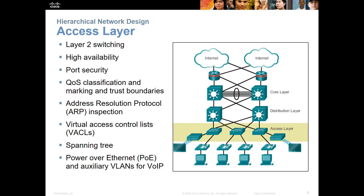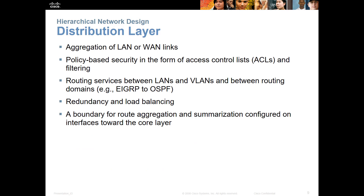Part of the access layer is Layer 2 switching. Features there include high availability, port security, QoS, access lists, STP, and because these are end nodes, probably PoE-type switches. At the distribution layer, we're aggregating LAN and WAN links, doing policy-based security with ACLs, possibly performing routing, and providing redundancy and load balancing. This layer also provides a boundary for route aggregation and summarization sent up to the core.